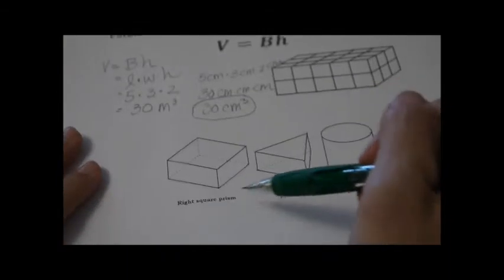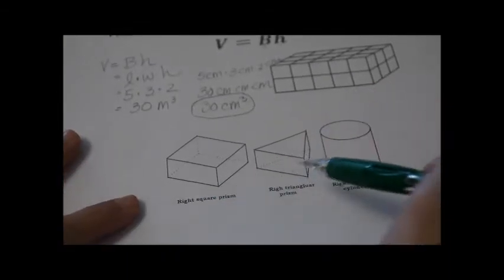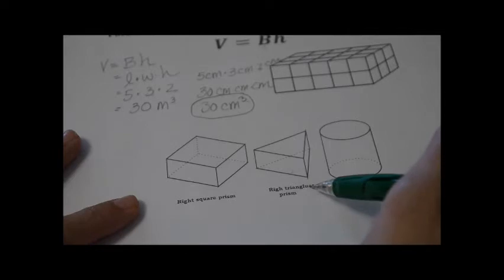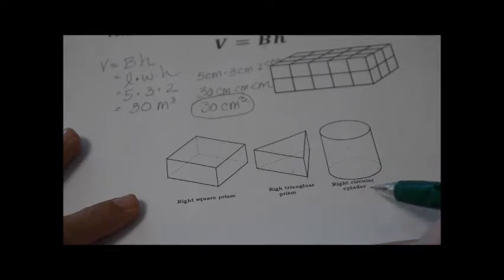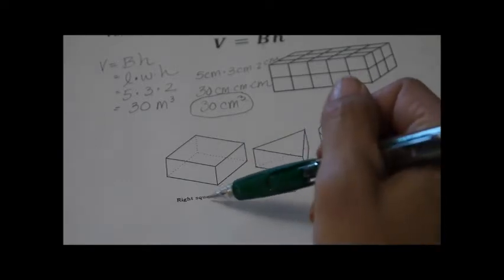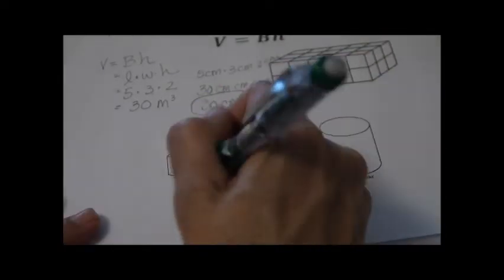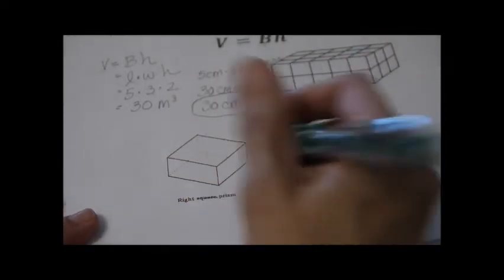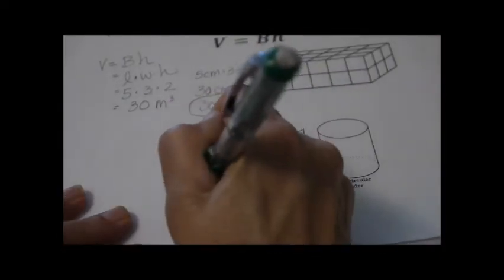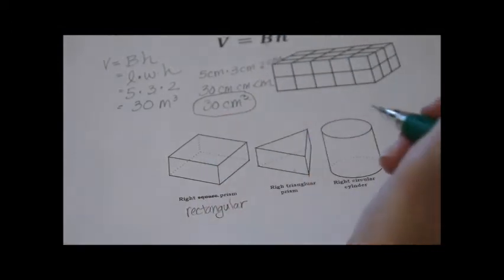Looking down here, we have a right square prism, a right triangular prism, and a right circular prism. Actually, cross out square — the picture I gave you is actually a rectangular prism. The one in the book is square, but mine is not.